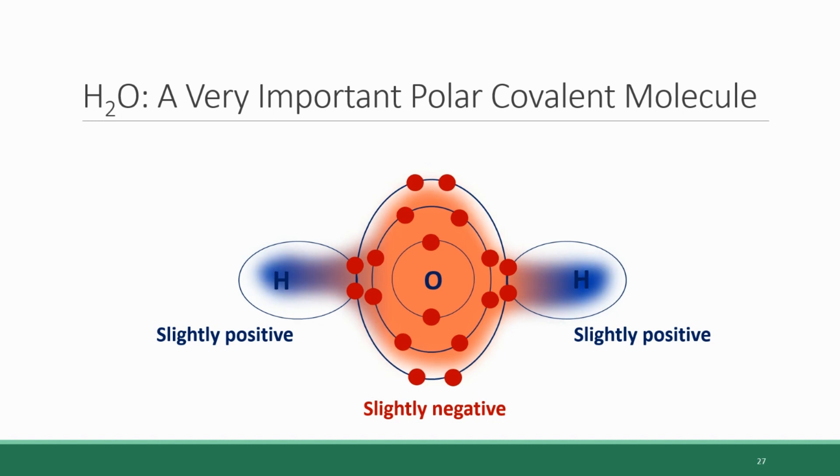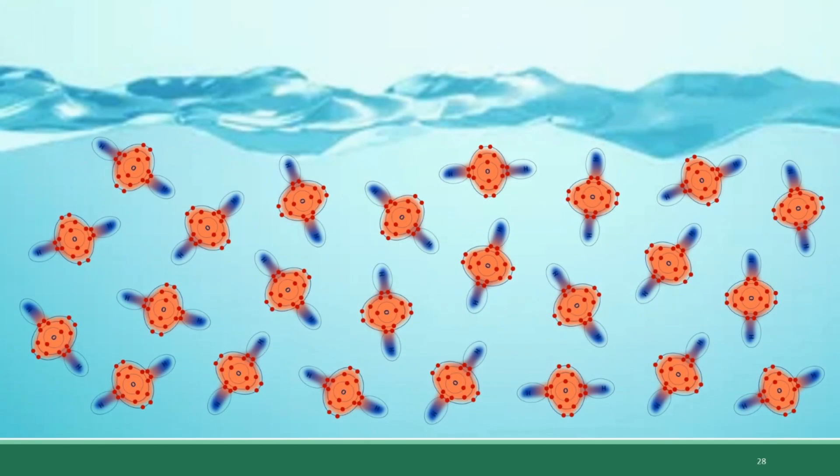The polar nature of the water molecule and the fact that it has these negative and positive poles gives water many of the qualities that allow it to support life. When looking at a body of water or the water inside cells, you're not talking about one single water molecule, but many water molecules together.